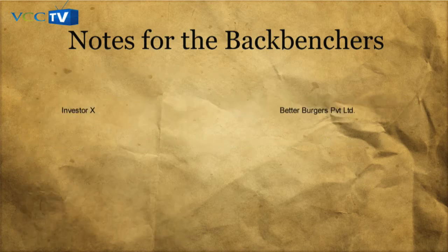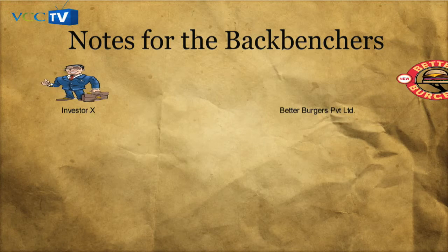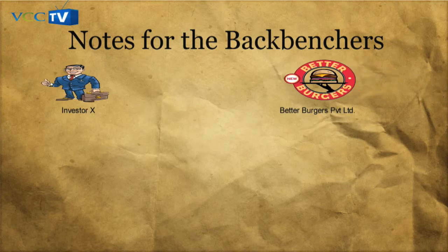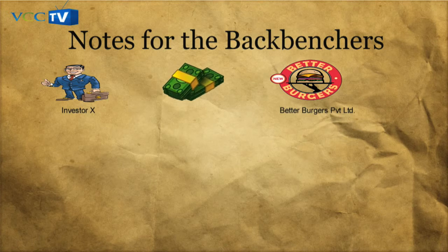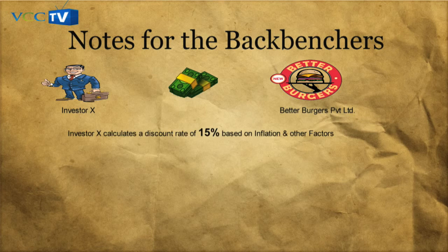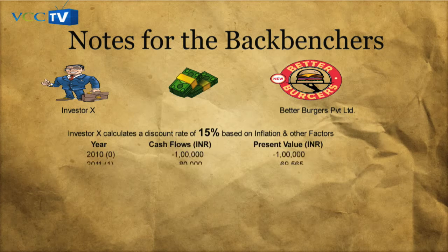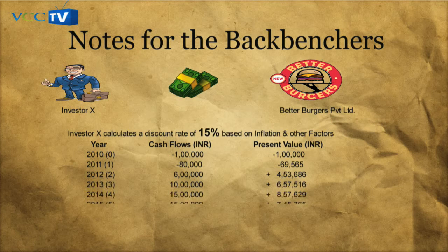Let's look at a scenario in which our investor X is looking to acquire Better Burgers Private Limited. He's not exactly sure how much he should pay to buy this food chain because, while the business is small, it's growing very fast. Considering inflation and other such factors, he calculates a discount rate of 15% and, using the DCF formula, applies it to the past and future projected cash flow numbers.